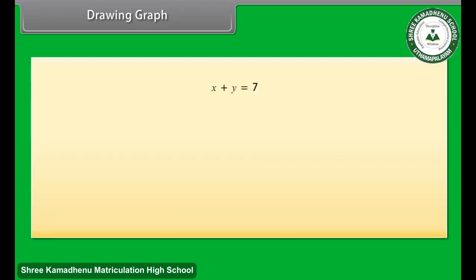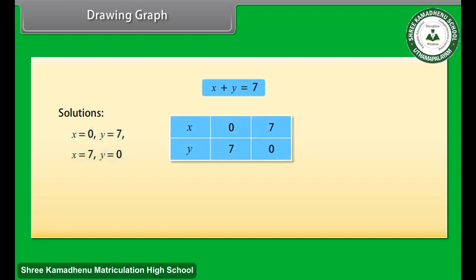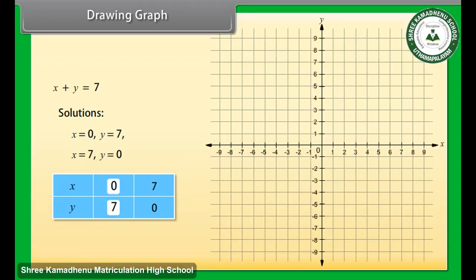Let us draw the graph of the equation X plus Y equals 7. To draw the graph we need at least two solutions: X equals 0 and Y equals 7, and X equals 7 and Y equals 0. We use a table with these values of X and Y. The point for X equals 0 and Y equals 7 is plotted, and the point for X equals 7 and Y equals 0 is plotted. Joining these two points gives the required graph for the given equation.